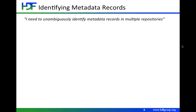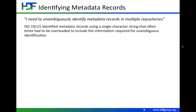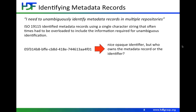One of the things that really is important these days, particularly as metadata records are shared across a wide variety of repositories, is unambiguously identifying them. In 19115, there was a character string called file identifier. Most of you are familiar with this because it was required in the ANSLIC profile. Because it was just a character string, it had to be overloaded in many situations to include information required for unambiguous identification. The New Zealand metadata I worked with had UUIDs, which are opaque identifiers — but the question of who owns or is responsible for that identifier can't be answered.